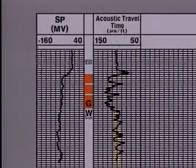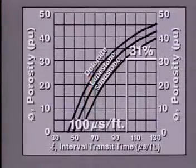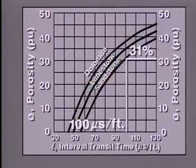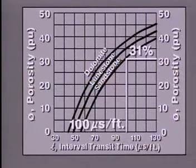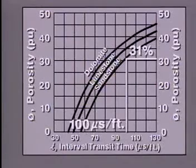Note that travel times are generally faster in the water-saturated sand below the gas column, averaging about 100 microseconds. Using our chart again, this reading gives us a porosity value of 31%, which is closer to the true porosity value of the sand compared to the high porosity value determined in the gas column.